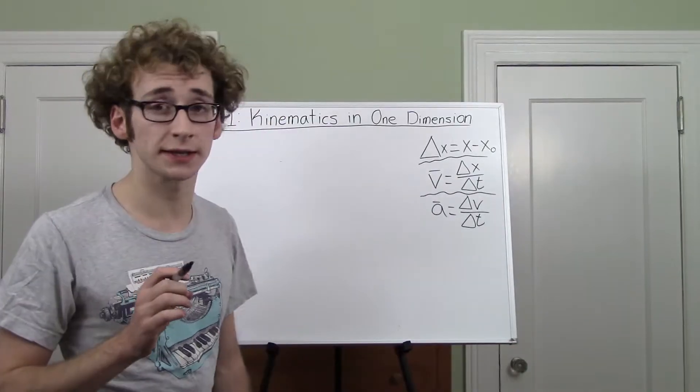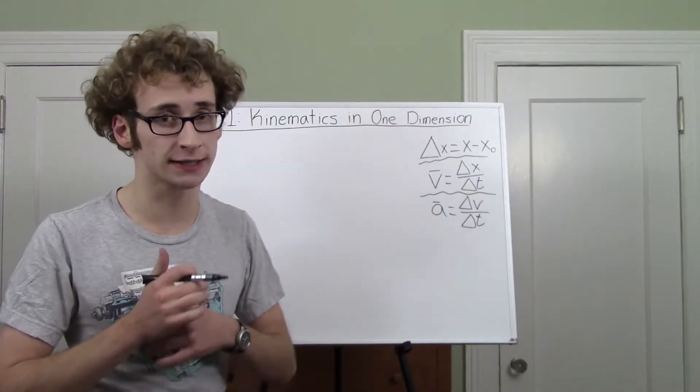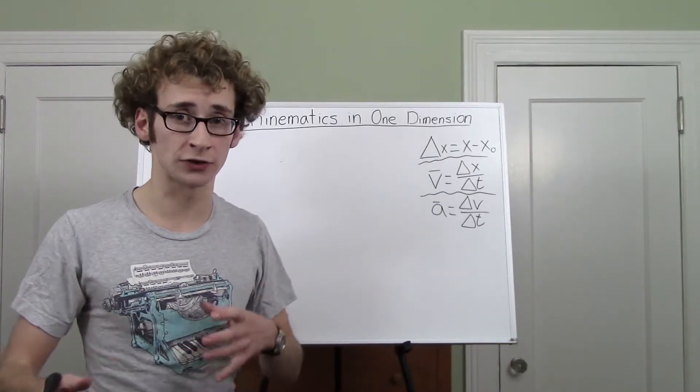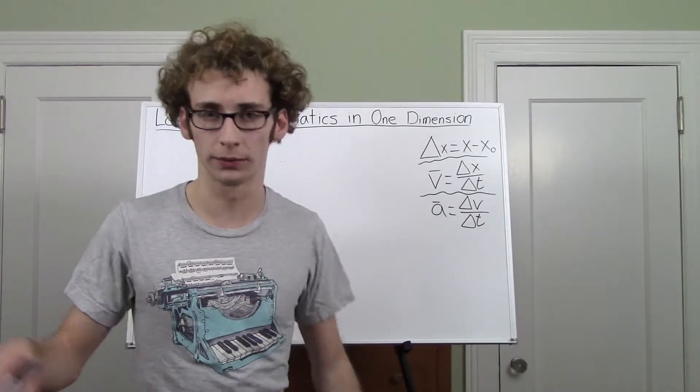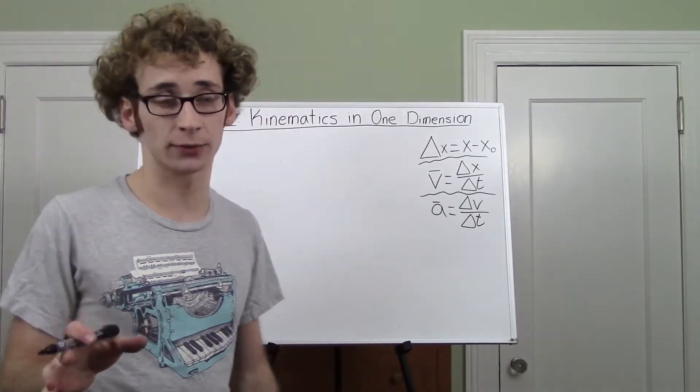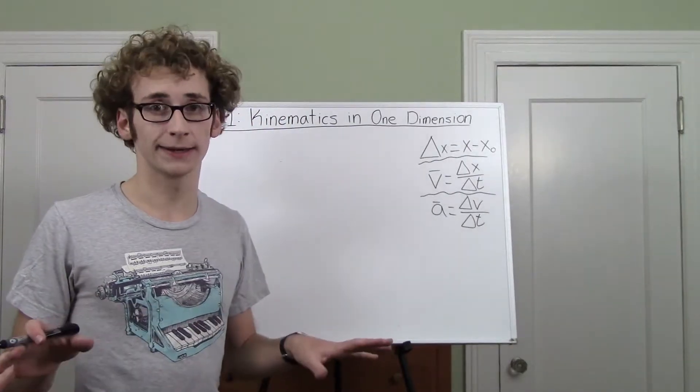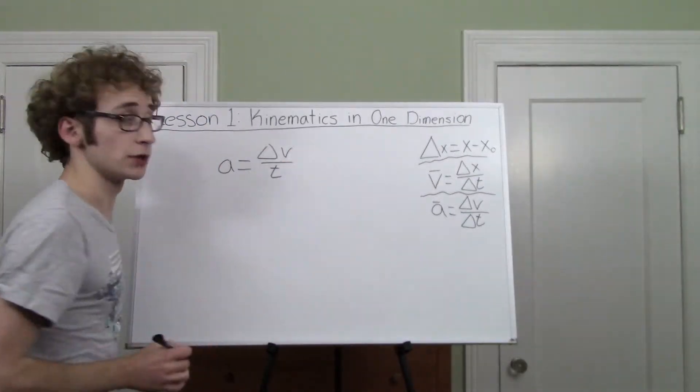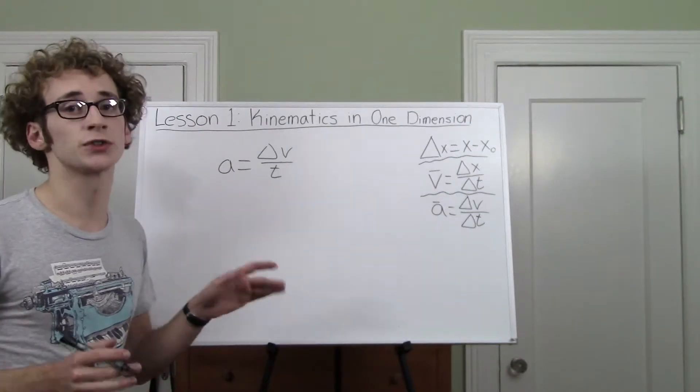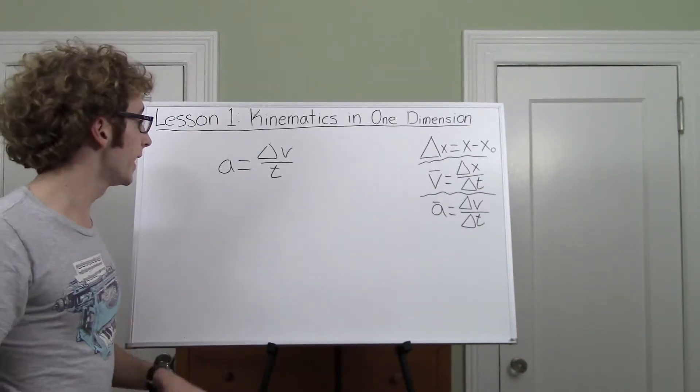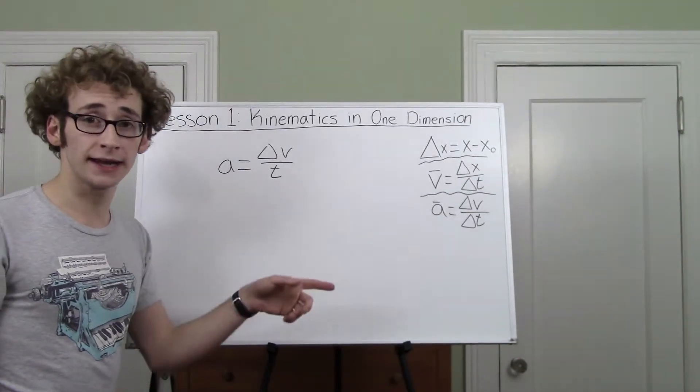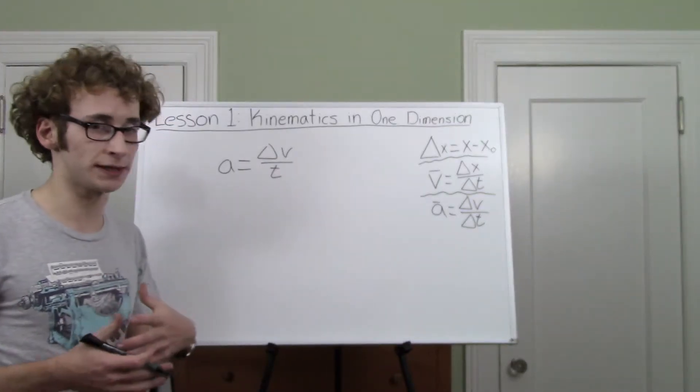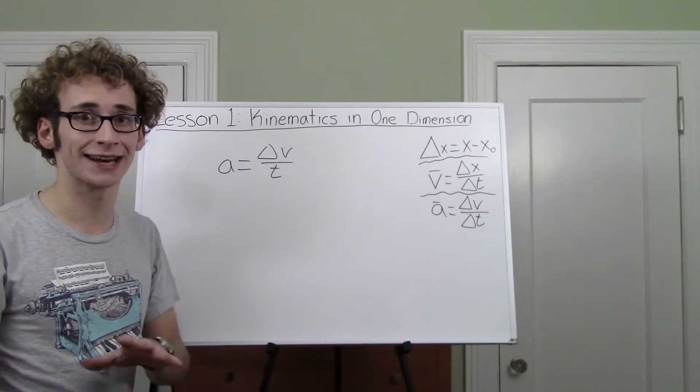One thing you should know is that these equations will all assume that acceleration is constant. If acceleration is changing, then you have to use multiple equations, one after another, and that's a whole to-do, and we're not going to get into that right now. So for now, acceleration is constant. Let's take our acceleration equation. Notice I dropped the delta on the t because we're starting at time equals zero. And also notice that I dropped the bar over the a because it's not average because a is constant. The average will be equal to the instantaneous acceleration at any given moment.